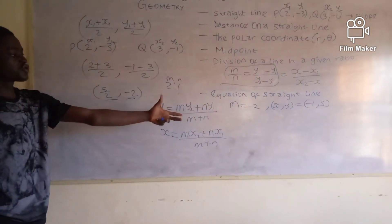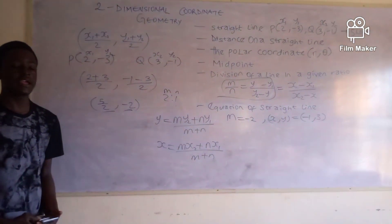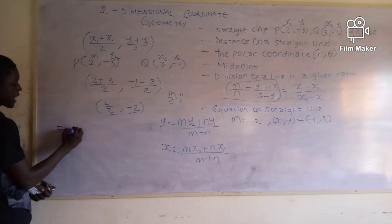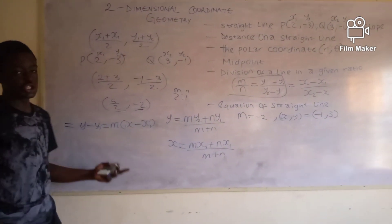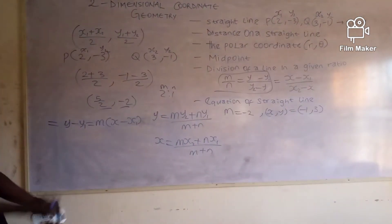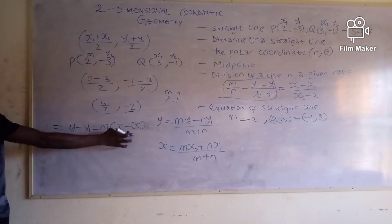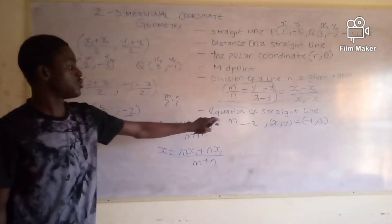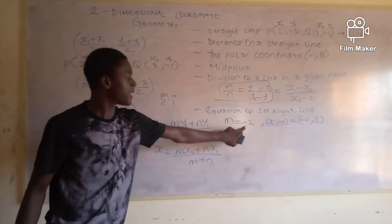The equation of a straight line tells us the equation with which the line was drawn, and it can be used to plot a straight line. The formula is: y - y1 = m(x - x1). This comes from rearranging the slope formula — since m = (y - y1) / (x - x1), cross-multiplying gives y - y1 = m(x - x1).